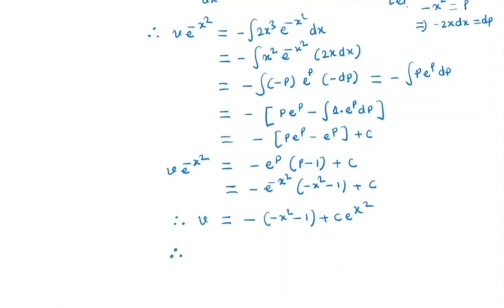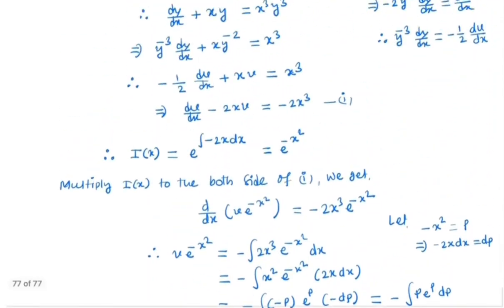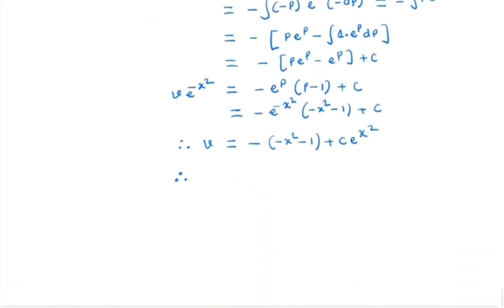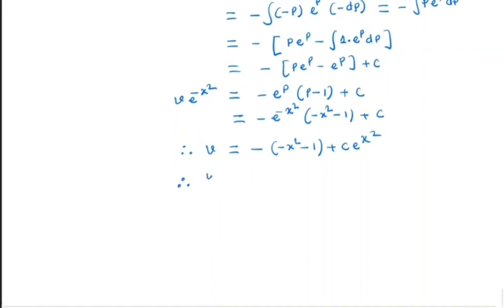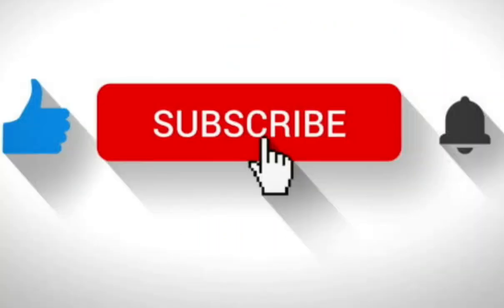So we write the general solution. Since v = y⁻², the general solution is y⁻² = x² + 1 + C · e^(x²). That is the final answer.